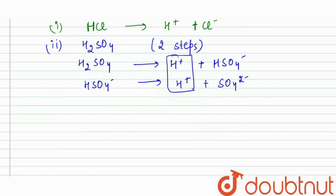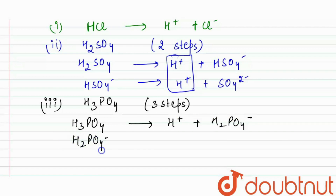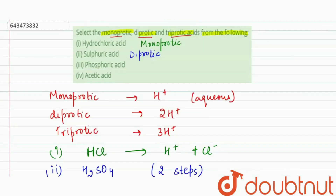Third is phosphoric acid, written as H₃PO₄. Its dissociation takes place in three steps: H₃PO₄ → H⁺ + H₂PO₄⁻; then H₂PO₄⁻ → H⁺ + HPO₄²⁻; and finally HPO₄²⁻ → H⁺ + PO₄³⁻. We get three H⁺ ions, so phosphoric acid is triprotic.